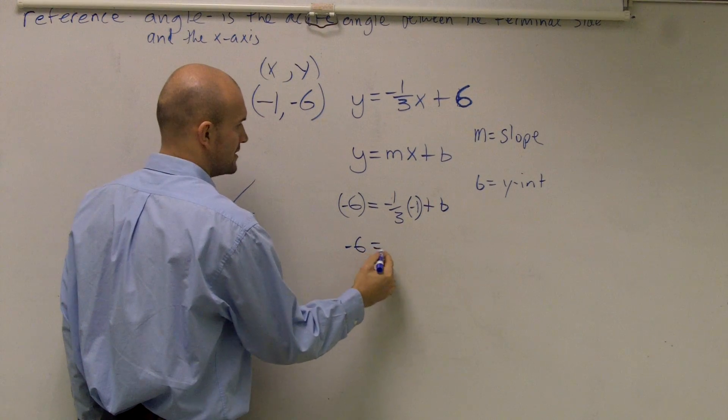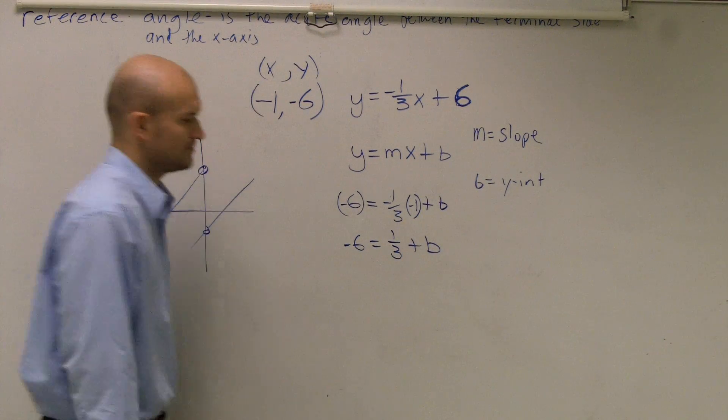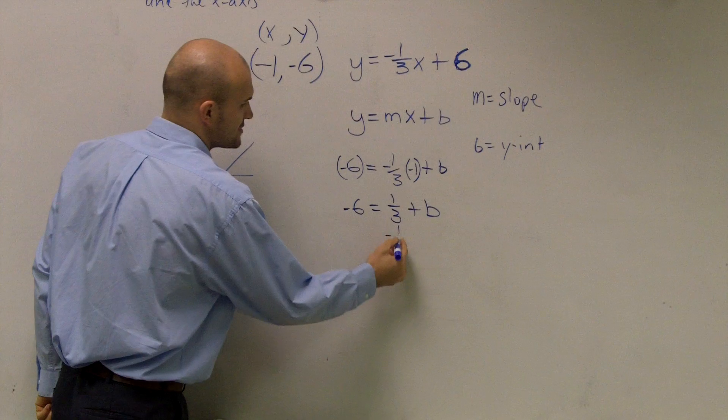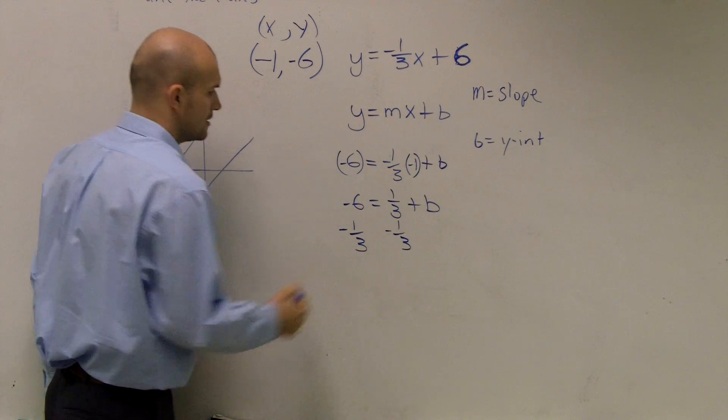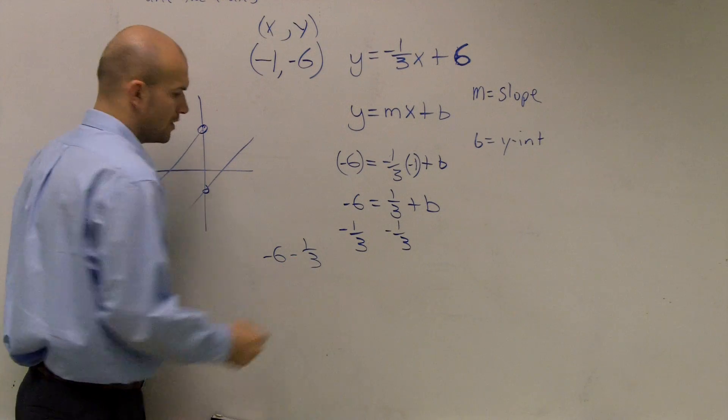So now, I can simplify this. So therefore, I have negative 6 equals a positive one-third plus B. Then, to find what my answer B is, I have to subtract one-third.